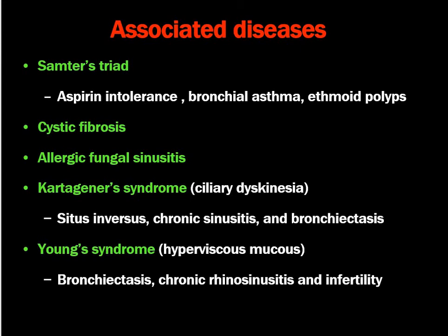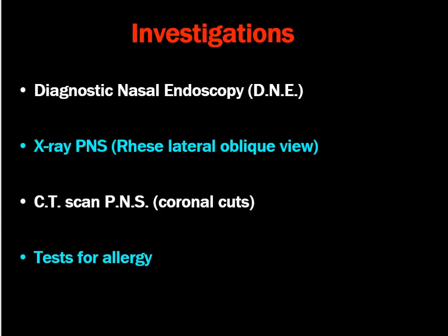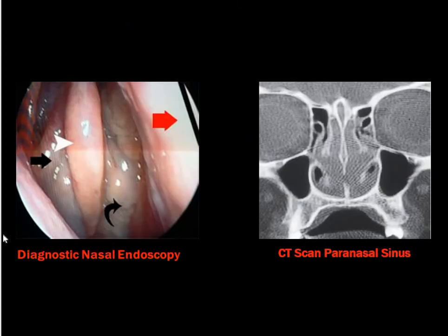Kartagener's syndrome, also called ciliary dyskinesia, is characterized by situs inversus, chronic sinusitis, and bronchiectasis - basically a problem of ciliary function. Young's syndrome also involves hyperviscous mucus due to a ciliary problem leading to bronchiectasis, chronic sinusitis, and infertility. These conditions may be associated with ethmoidal polyps. Ethmoidal polyps are more commonly found in children. Investigations include diagnostic endoscopy, CT scan of nose and paranasal sinuses in coronal parts, and tests for allergy as allergic conditions may be present.